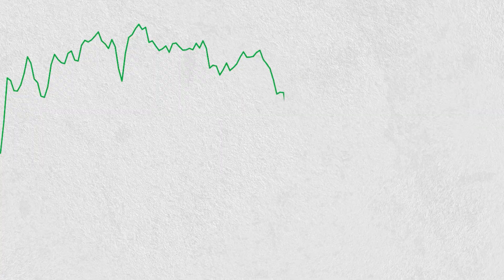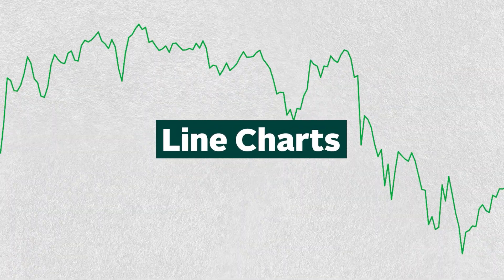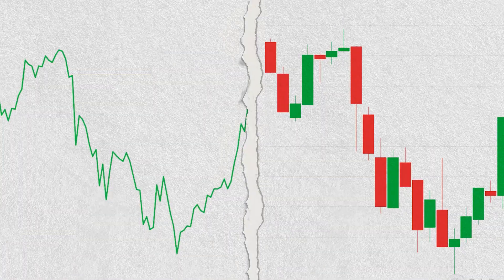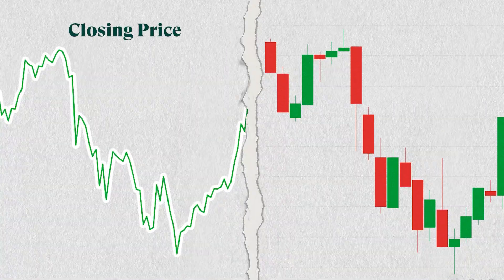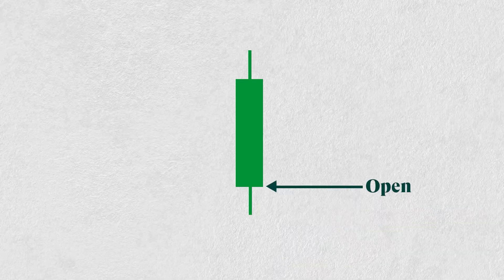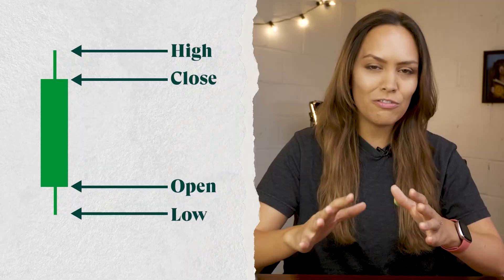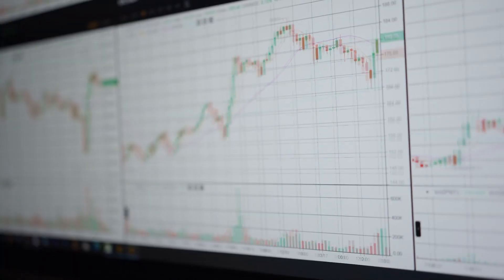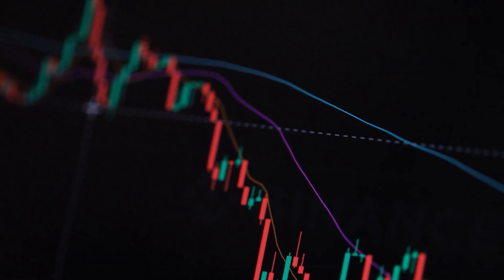Simple analysis can be done with line charts, but it's more common for traders to use the candlestick chart. Line charts only record the closing prices for a market, whereas candlesticks display the open, high, low, and closing prices. The additional information on candlestick charts allows for more in-depth analysis and can make patterns easier to observe.